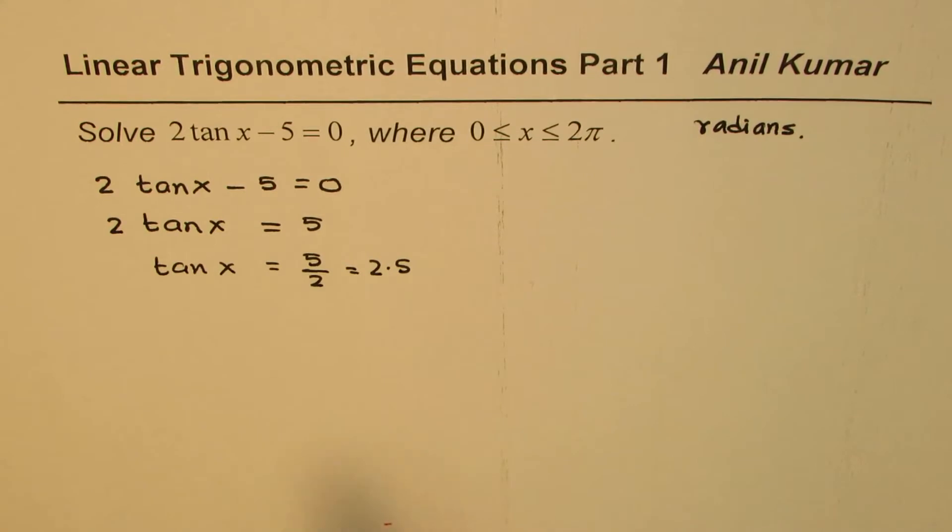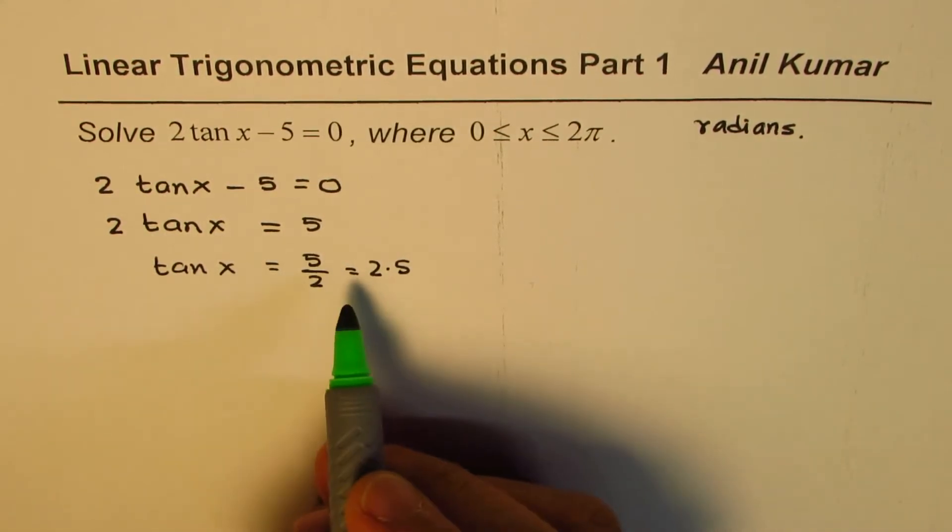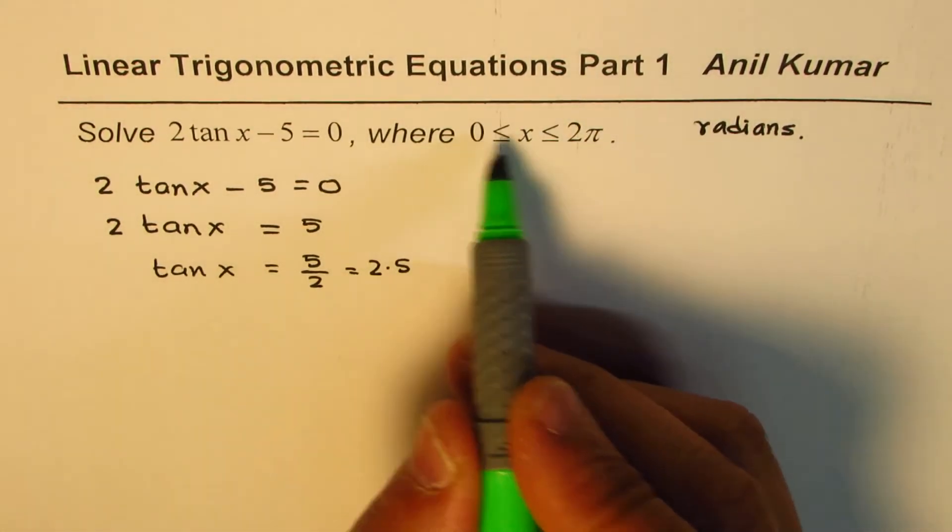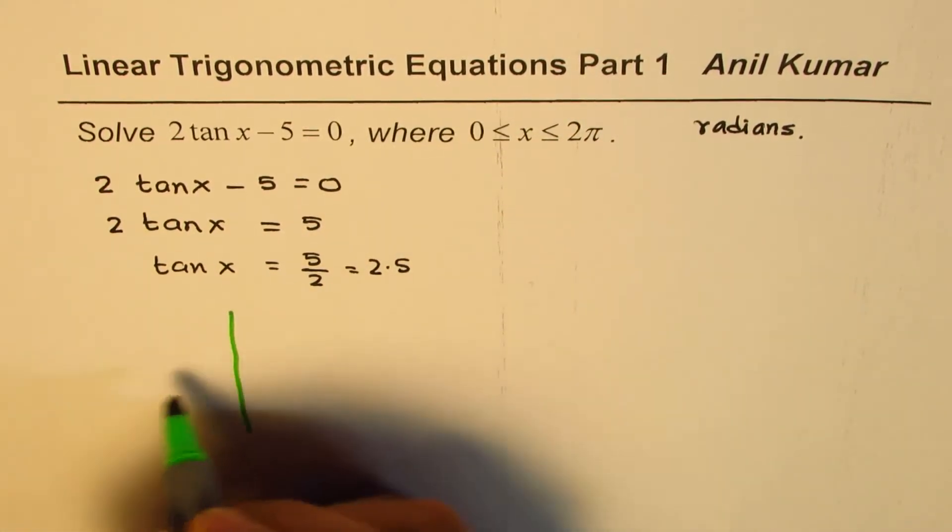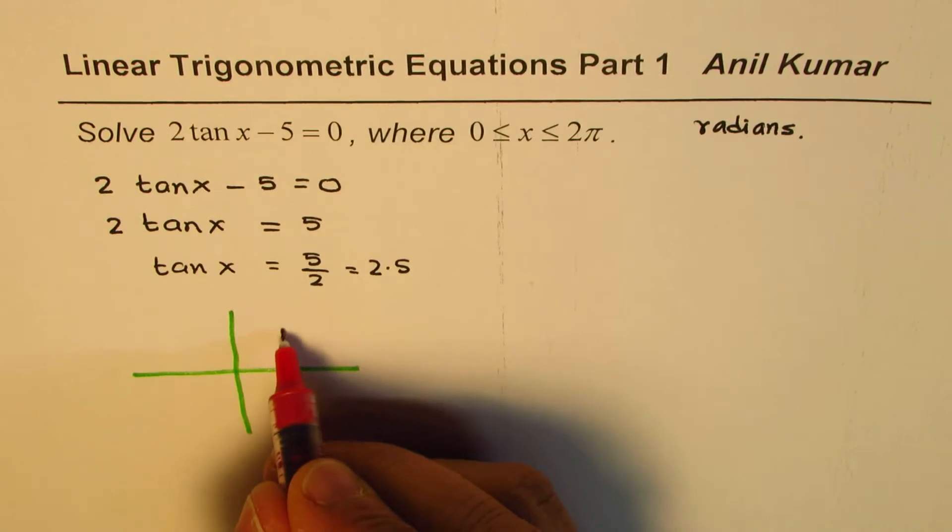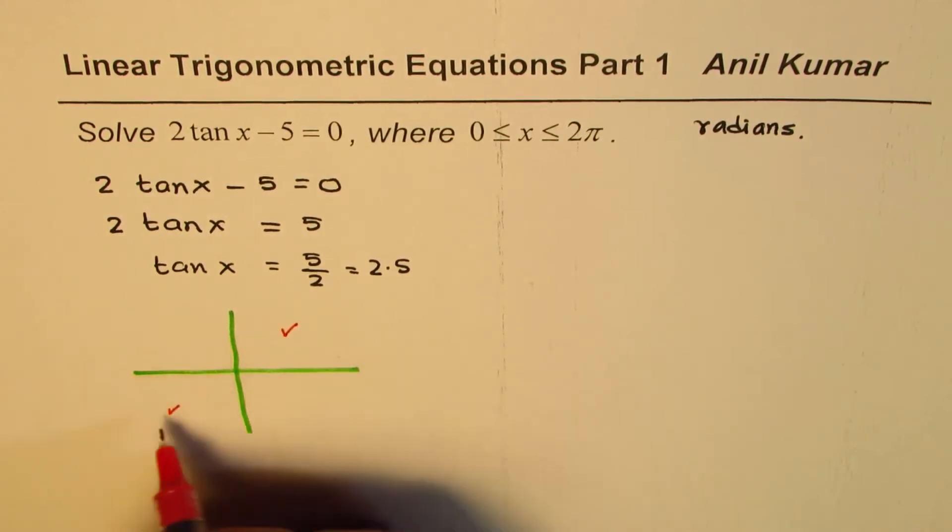Now, we need to find x. How many values are we expecting? Tan x equals 2.5 in this domain 0 to 2 pi. We know that tan is positive in these two coordinates, first and third.